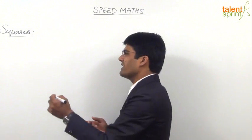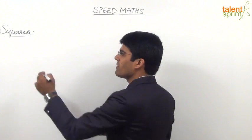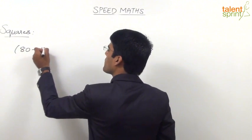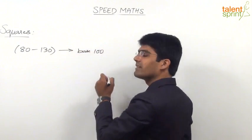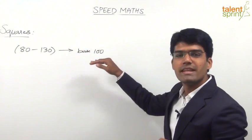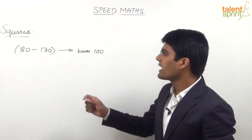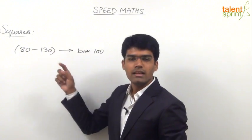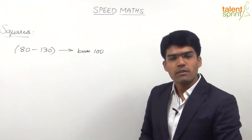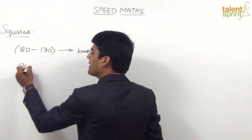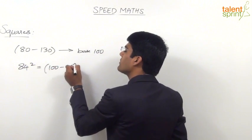Just as from 30 to 80 we take the base as 50, from 80 to 130 we can take the base as 100. So for any number from 80 to 130, it should be taken as 100 plus x or 100 minus x. For example, 84 squared can be taken as 100 minus 16, whole squared. Generally, we might feel that 84 should be taken as 80 plus 4, but that is really very difficult compared to this method.